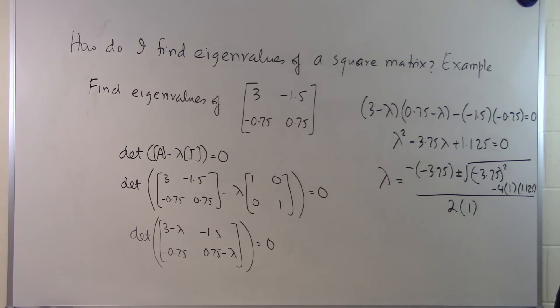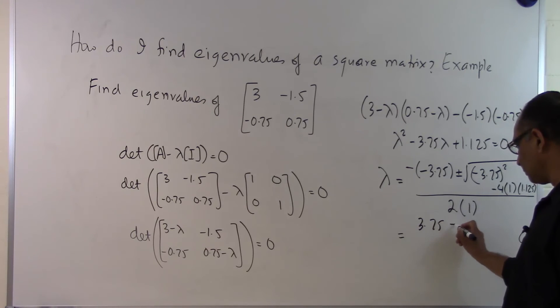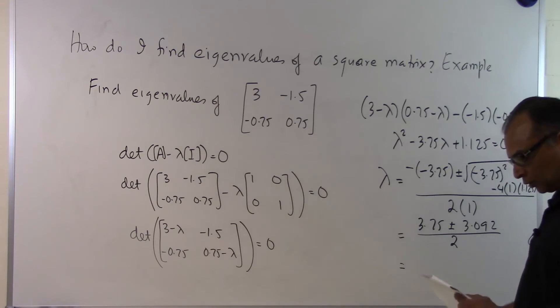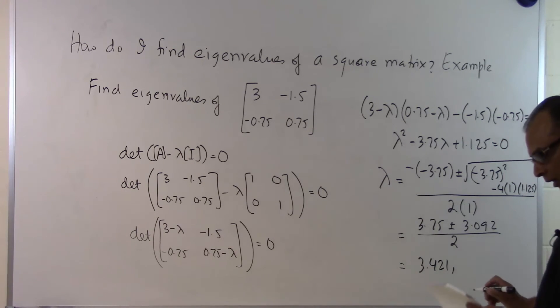Based on this, we get (3.75 ± 3.092) / 2. So we have our two roots: 3.421 and 0.3288.